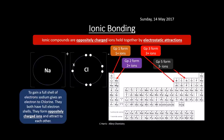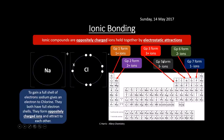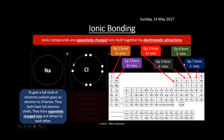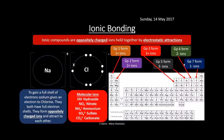We can use the periodic table to work out the types of ions: group ones form 1+ ions, group twos form 2+, threes form 3+. When you get to group five, it's easier to gain three electrons than lose five - energetically lower - so they form 3- ions. Group sixes form 2- and group sevens form 1-. You also need to know your molecular ions: hydroxide OH-, nitrate NO3-, ammonium NH4+, sulfate SO4 2-, and carbonate CO3 2-. Make sure you know these as you'll use them in compounds.